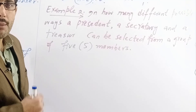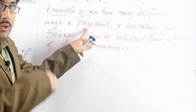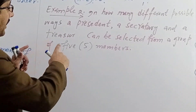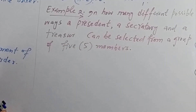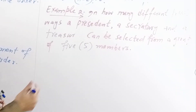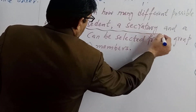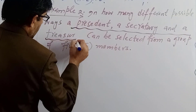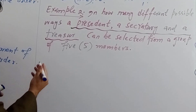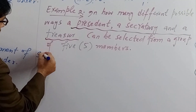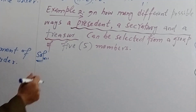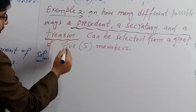The second example involves selecting a president, then a secretary, and then a treasurer. Here, a specific order is given in the selection — president first, secretary second, treasurer third. When an order is provided, we use permutation (nPr) instead of combination.